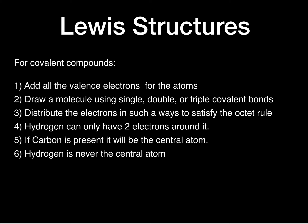Some reminders: hydrogen can only have two electrons around it. Carbon, if it's present, is always the central atom. And hydrogen can never be the central atom because hydrogen can only have two electrons around it. We'll do three examples — one with a single, double, and triple bond.